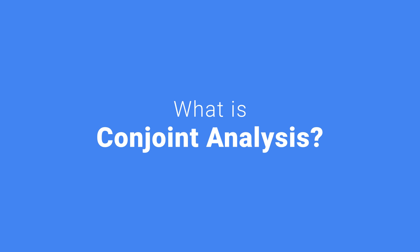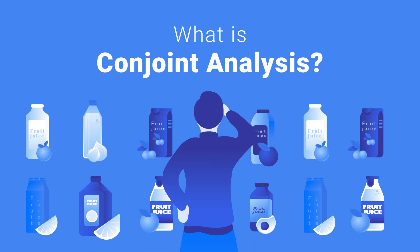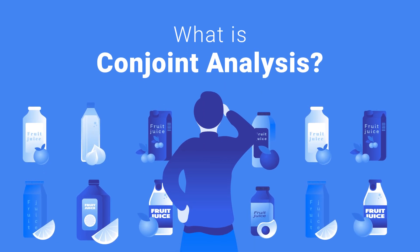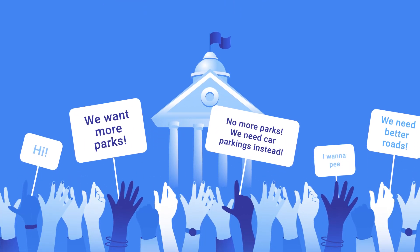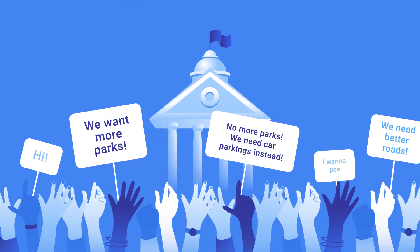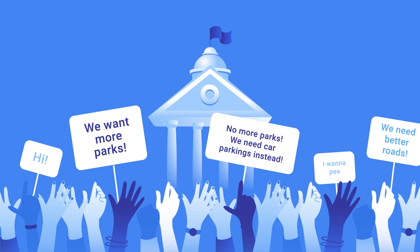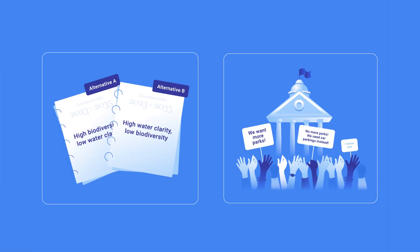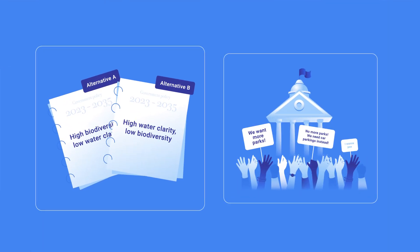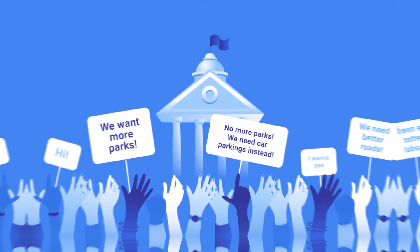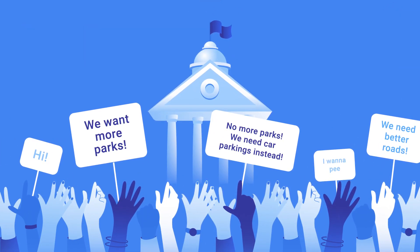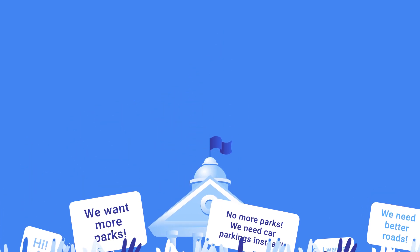Do you ever wonder what it is that really matters to people? Maybe you want to sell a new fruit juice product and you want to know what consumers look for when buying fruit juice. Or maybe you work in a government institution and would like to incorporate your citizens' preferences into creating public policy or community projects. If you've ever struggled to understand people's preferences, then Conjoint Analysis might be for you.